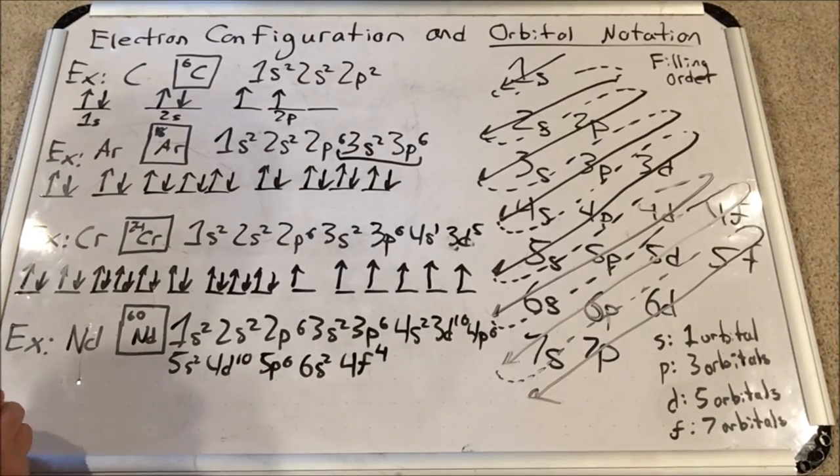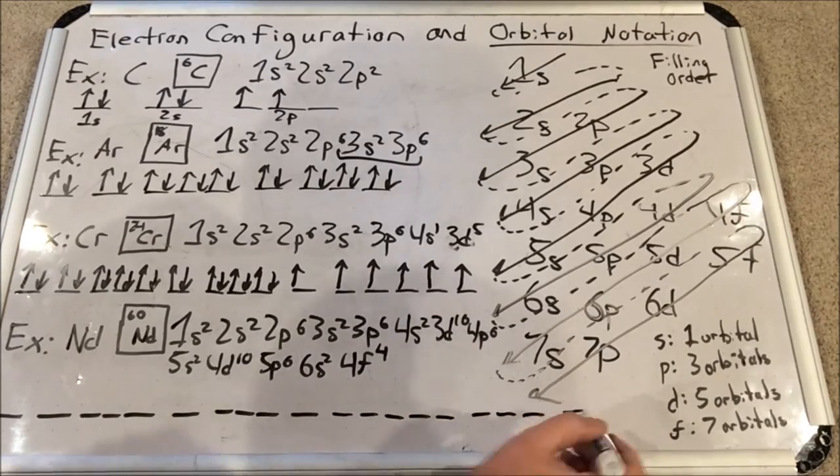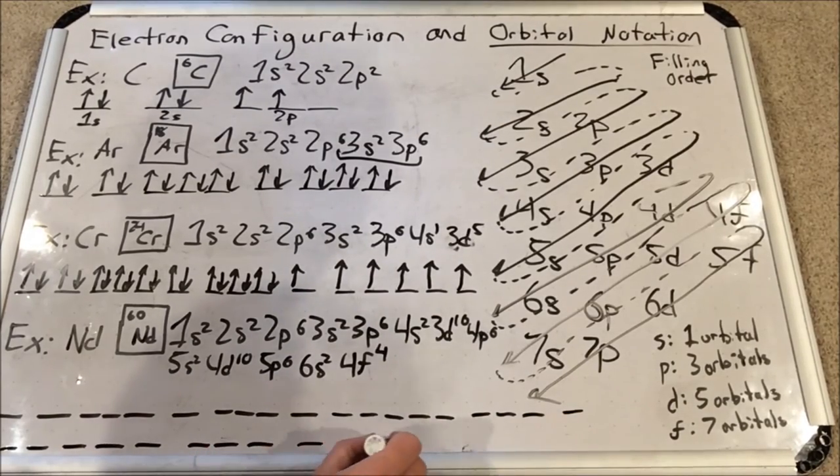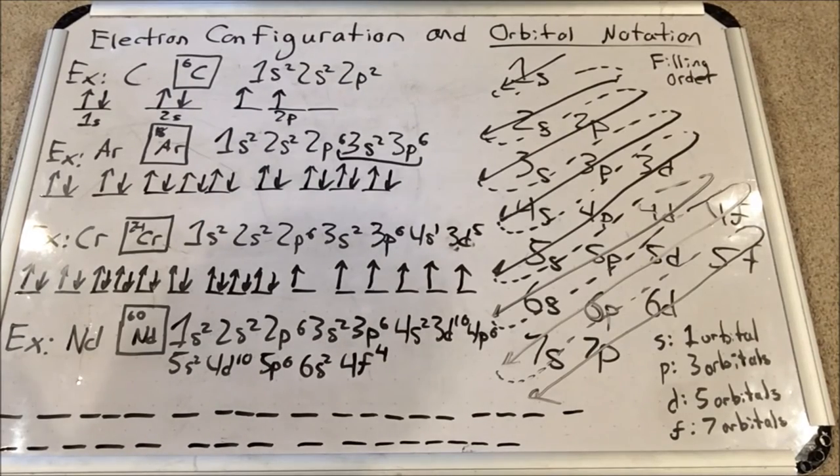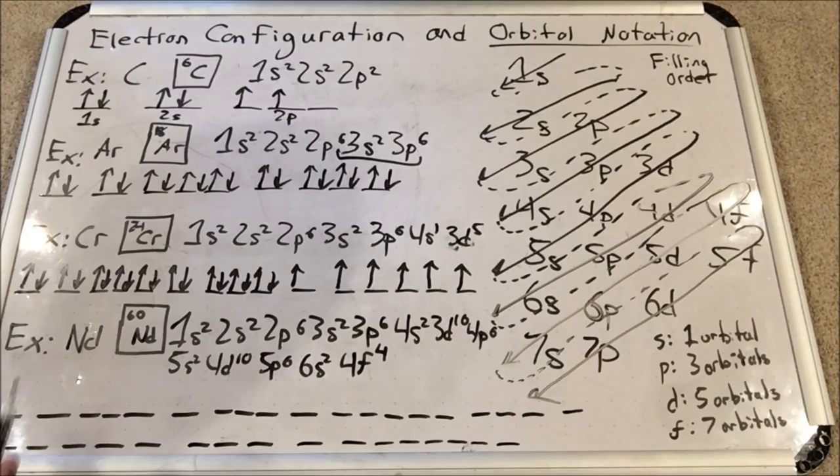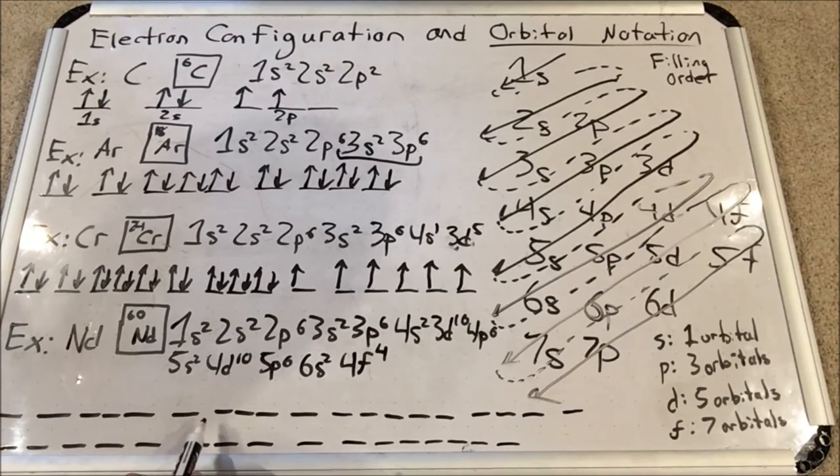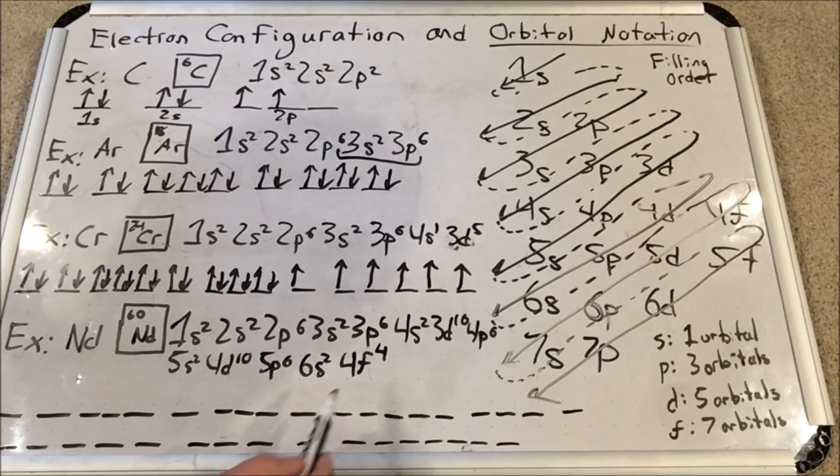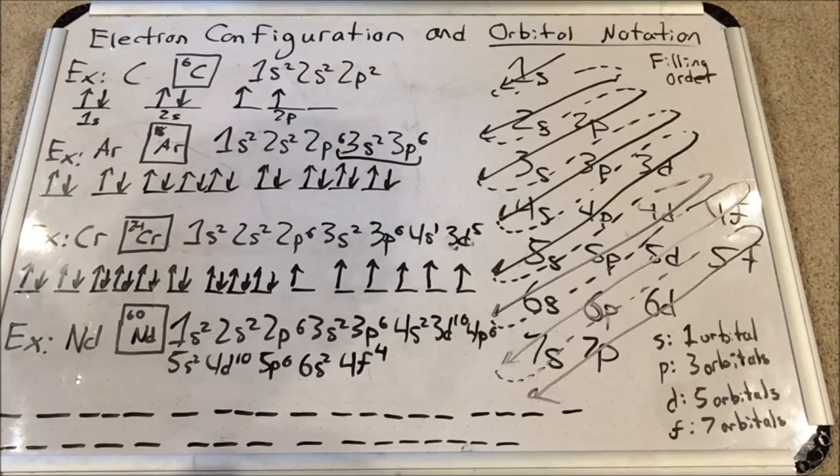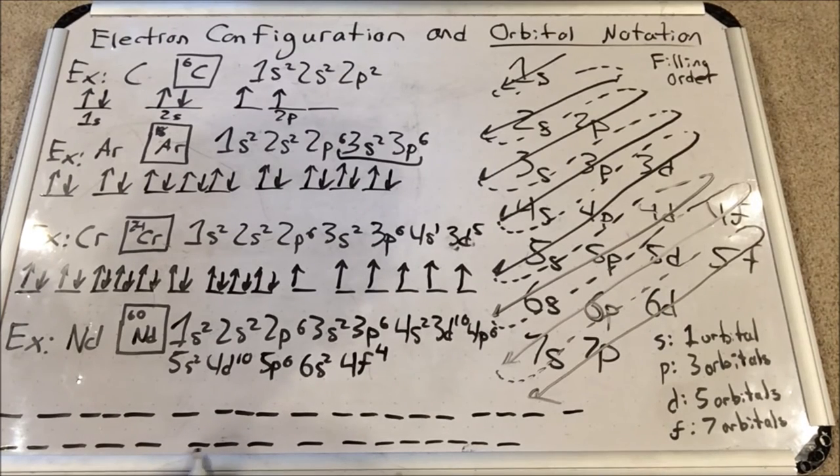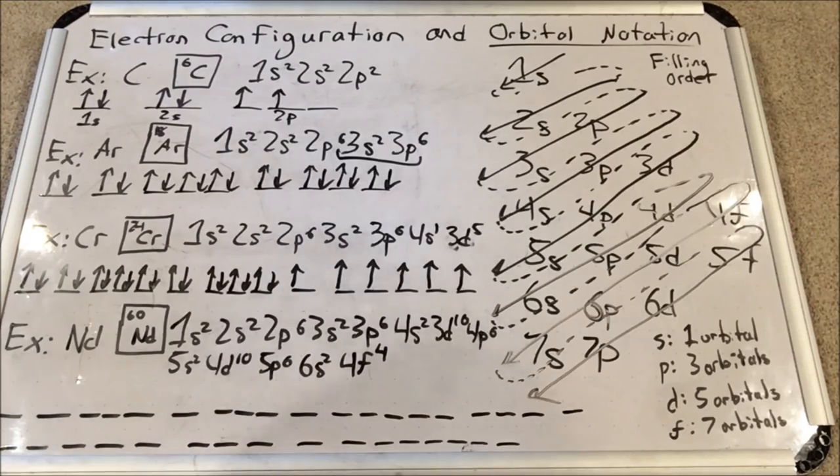Let's make sure we have the right orbitals: 1s, 2s, 2p, 3s, 3p, 4s, 3d, 4p, 5s, 4d, 5p, 6s, 4f. Now I'm going to start filling these and I'll pause it when we get to an interesting part.